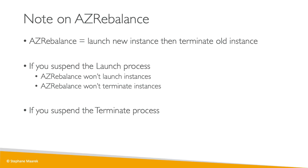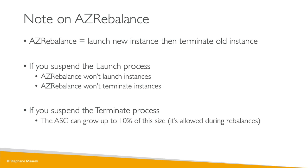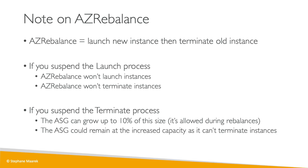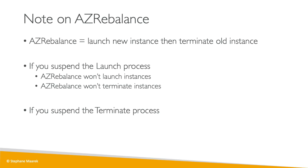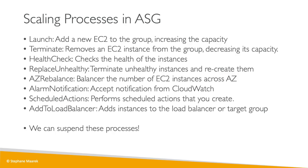If you suspend the Terminate process during an AZ rebalance, the ASG can still launch instances — it's allowed to grow up to 10% over its desired capacity during rebalances. So with a desired capacity of 10, it can go to 11. But it will remain at that increased capacity because it can't terminate instances. This is a popular exam question: if Terminate is suspended during AZ rebalance, the group runs at 10% over capacity. Remember: Launch, Terminate, Health Check, Replace Unhealthy, and AZ Rebalance are the most important scaling processes.